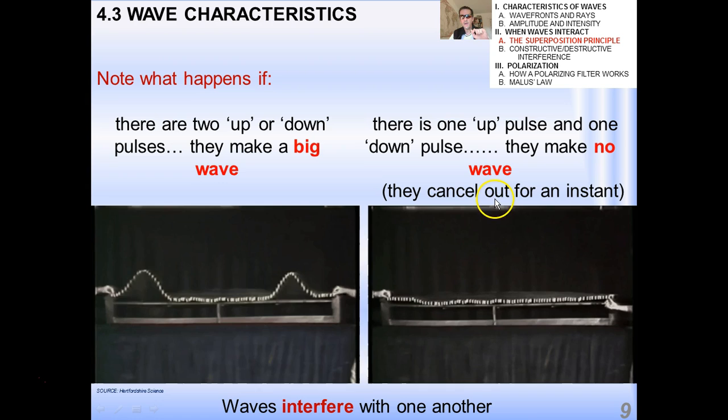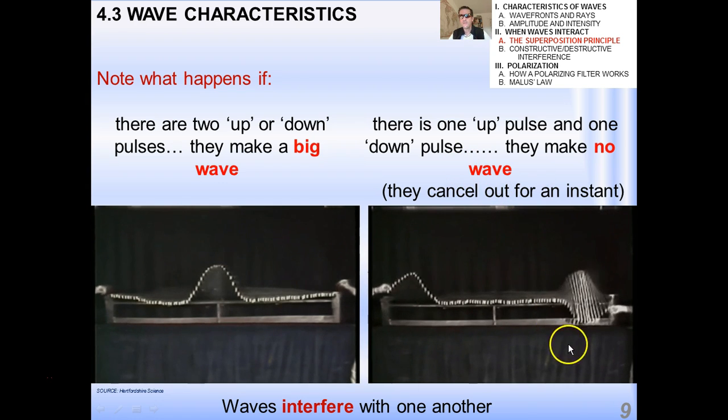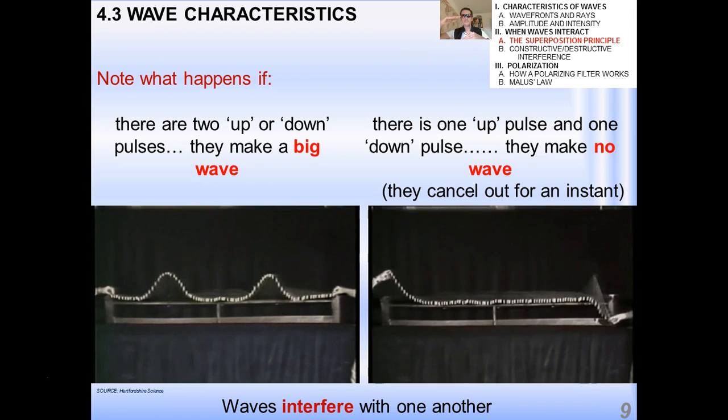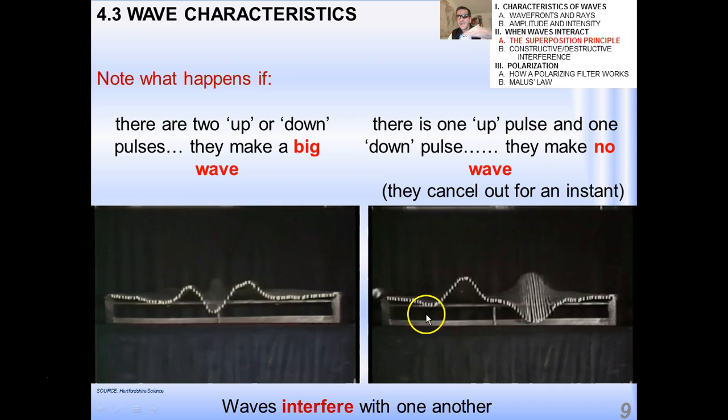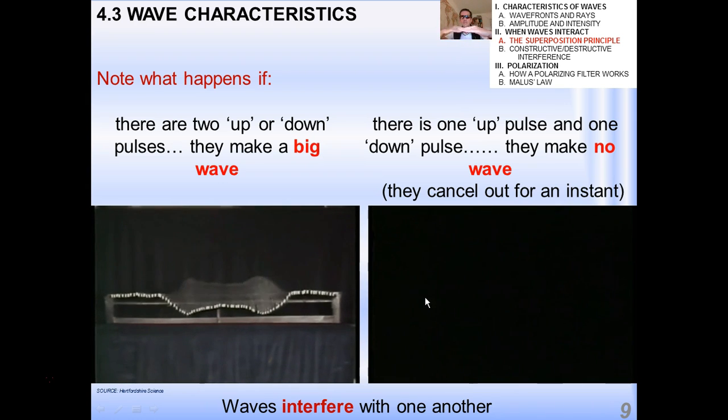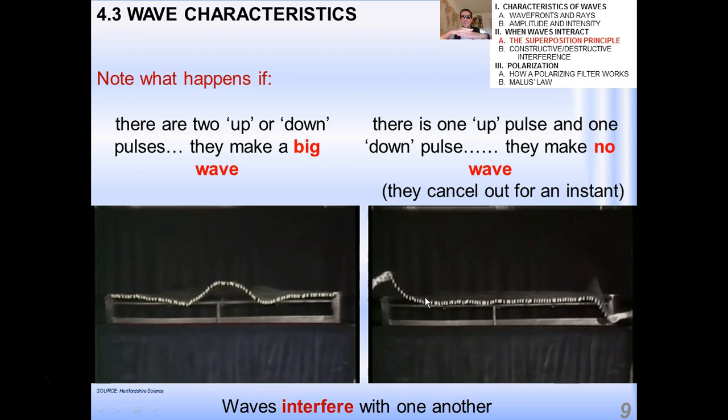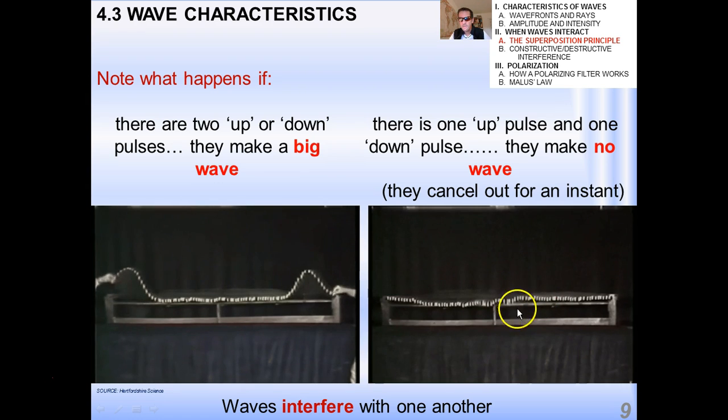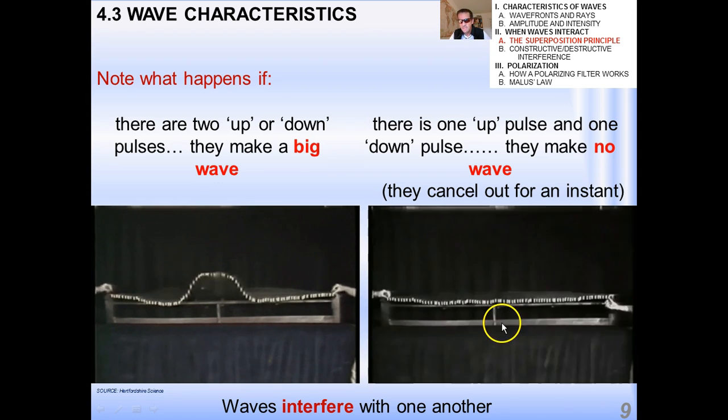Now if there are two up or down pulses, they make one big wave right in the middle. That is to say, they add up to basically create a wave that has double the amplitude or has the amplitude of each of the other waves summed together. Now if there's one up and one down, they make no wave at all. So in the middle, think about it as a positive and negative being added together. If they're the same amplitude, when they meet they will cancel out perfectly. They interfere with one another, and for that instant they cancel out.